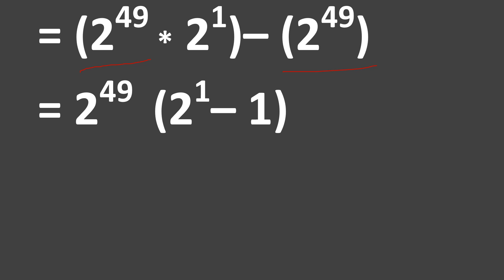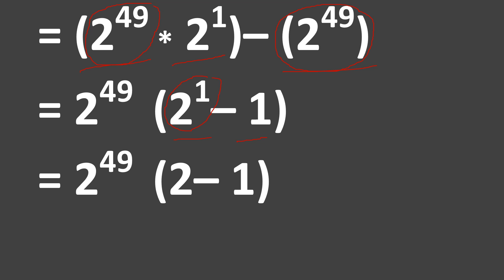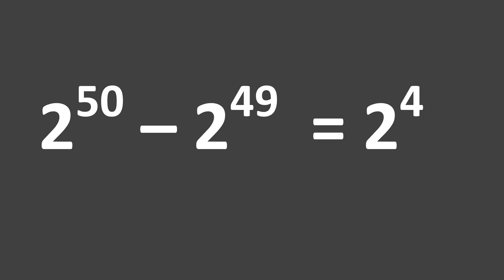Taking 2 raised to the power of 49 out, you are left with 1 in the first term, because if you divide by 2 raised to the power of 49 you have 1. Remember 2 raised to the power of 1 is also the same as 2, so 2 minus 1 is 1. So you have 2 raised to the power of 49 times 1, which equals 2 raised to the power of 49. We can clearly see that 2 raised to the power of 50 minus 2 raised to the power of 49 equals 2 raised to the power of 49.